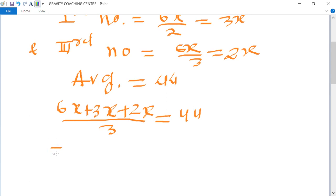So the sum of the numbers, 11x equals 44 multiplied by 3. So 44 is cancelled by 11, giving us x equals...